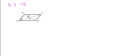Here you're told that DAE is equal to BCE, and DCE is equal to BAE, and you're asked to identify whether this is or is not a rhombus.